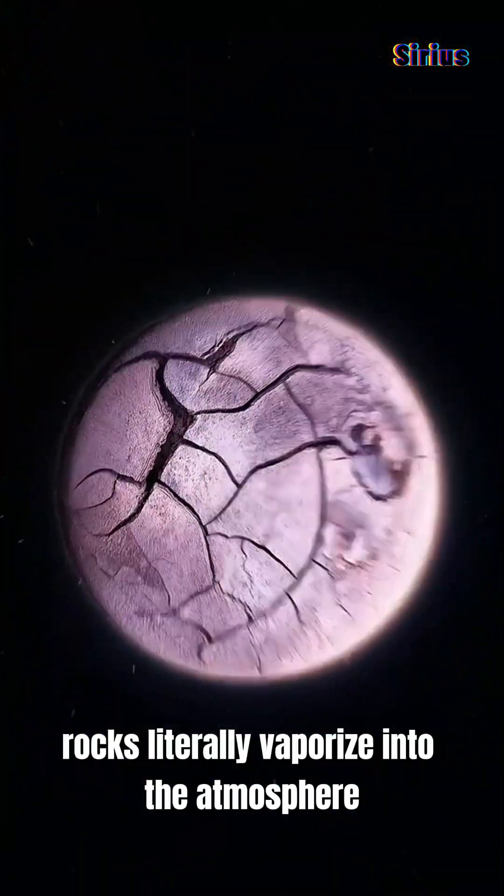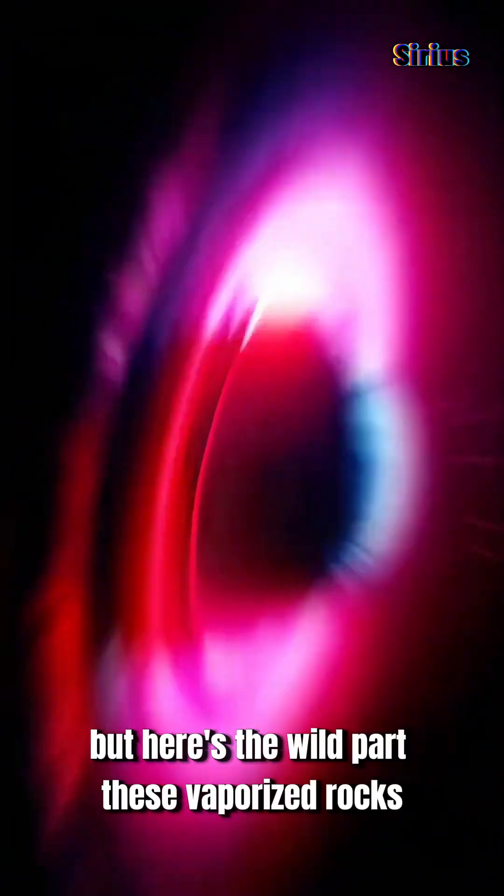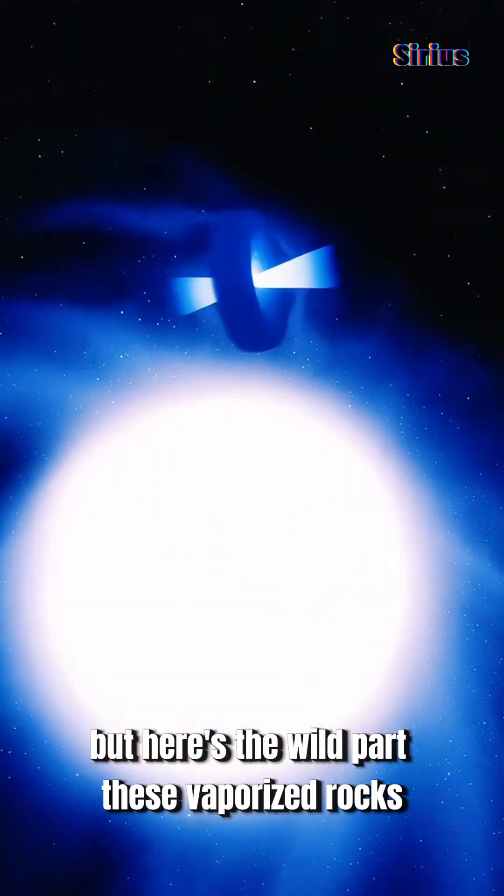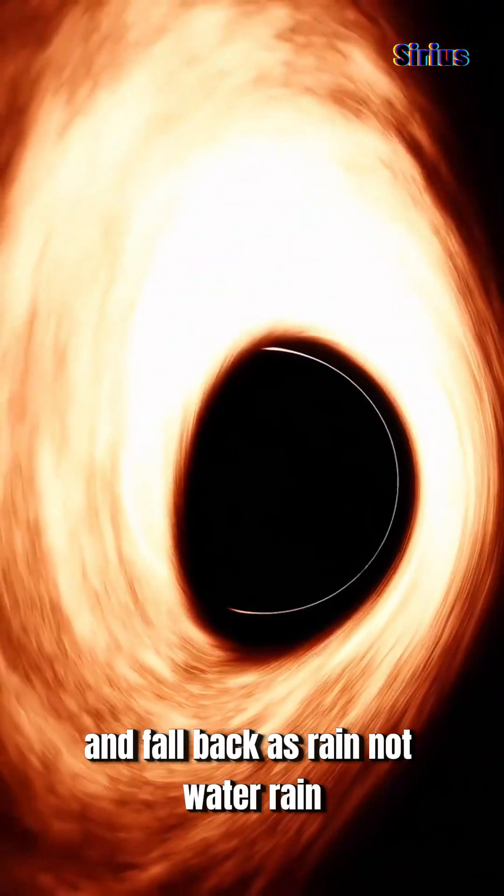On this molten side, rocks literally vaporize into the atmosphere. But here's the wild part. These vaporized rocks cool down on the planet's colder side and fall back as rain.